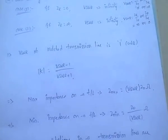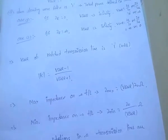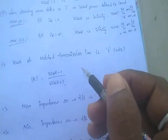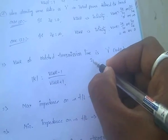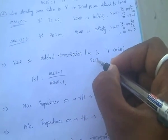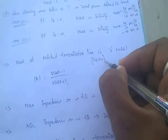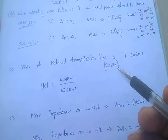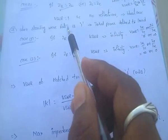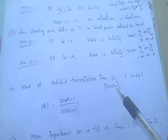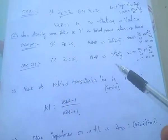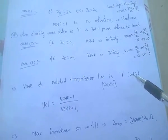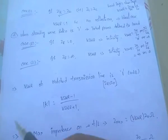For a matched line — that is ZR equal to Z0, load impedance equal to characteristic impedance — the VSWR value is 1. That is, in terms of dBs, it is 0 dB.